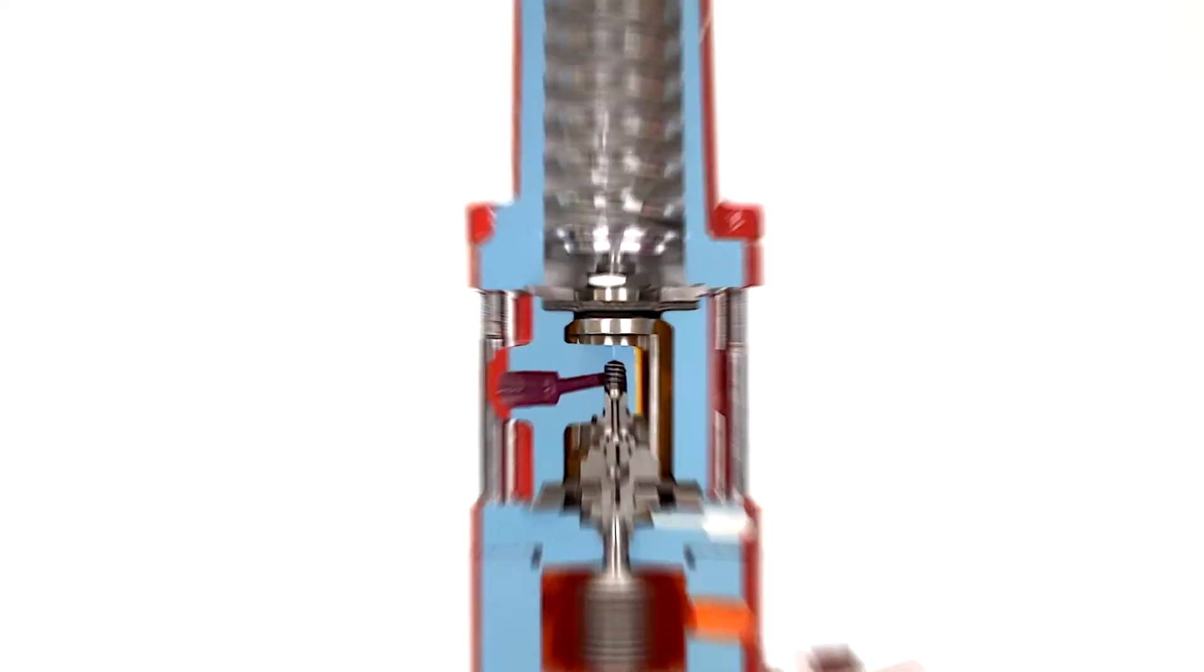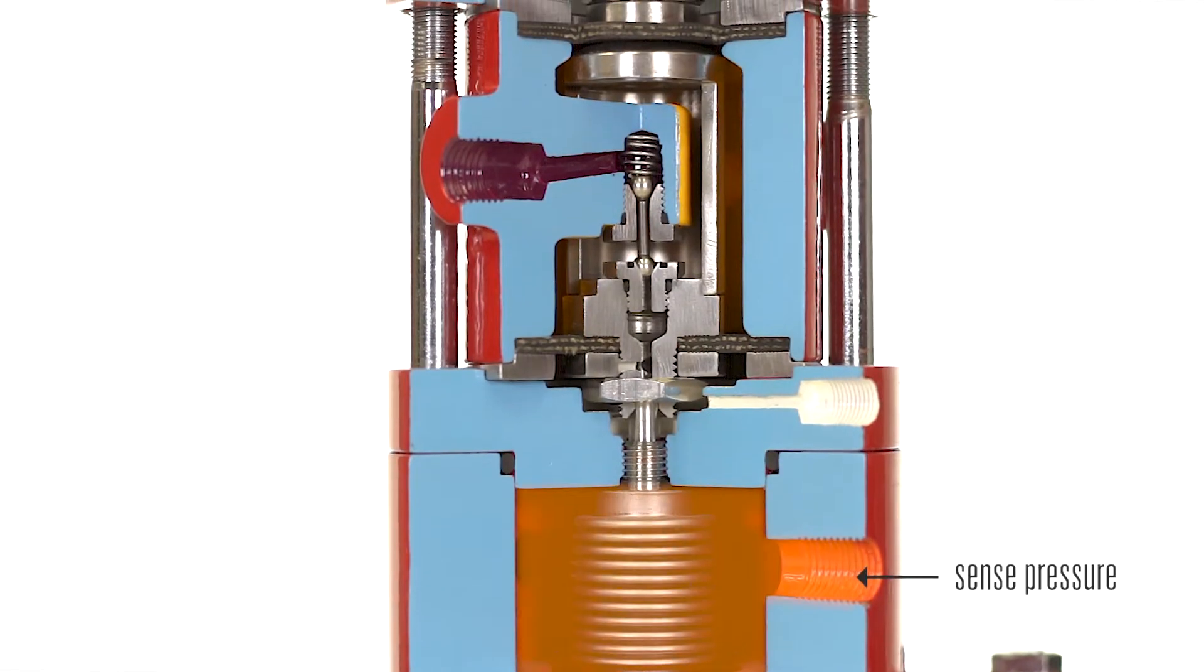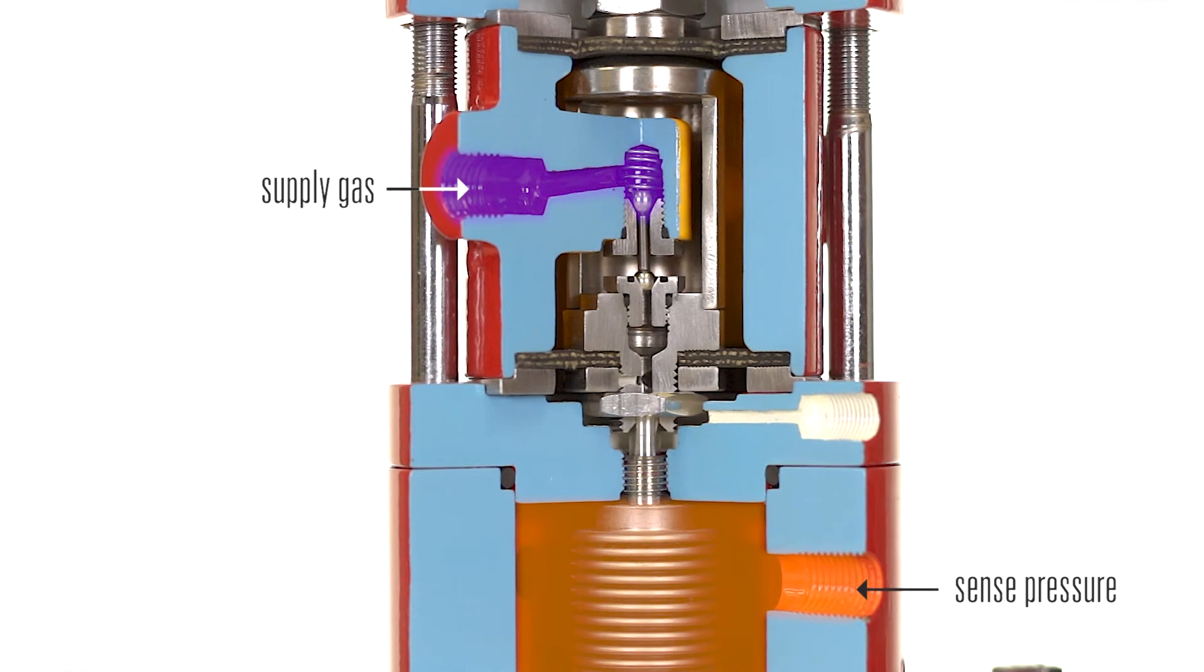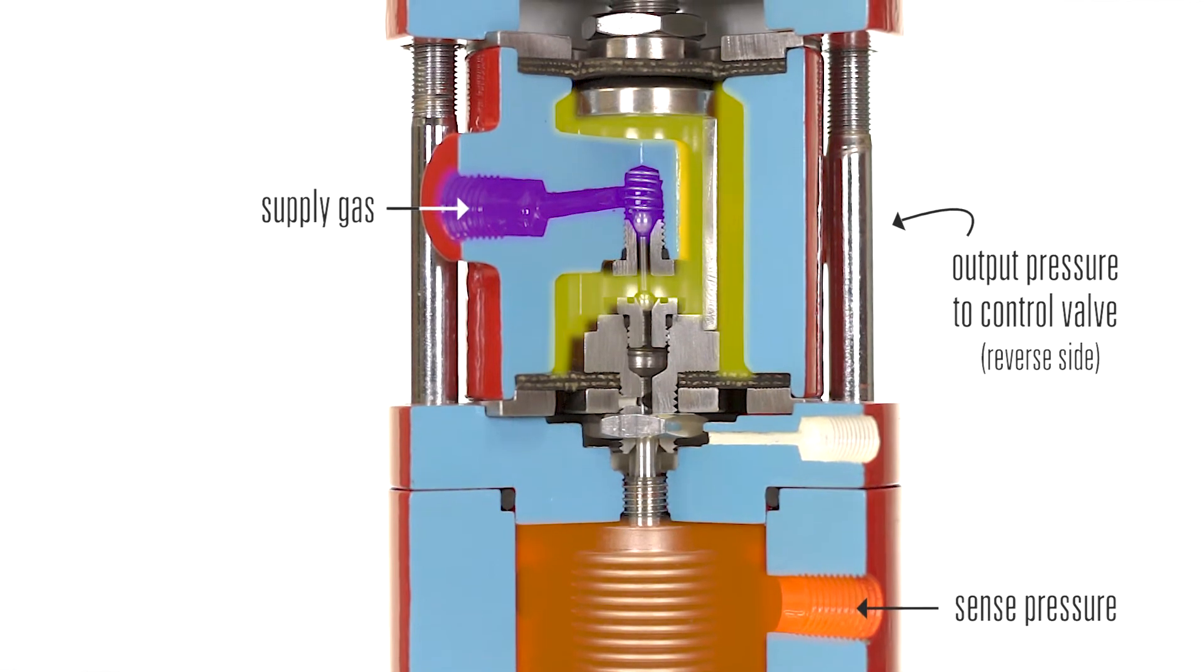There are three connection points in the pilot: one for sensing pressure, one for supply gas, and one for output of pressure to a control valve.